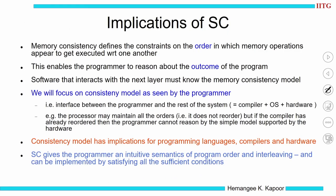The implications of the sequential consistency model are: first, it defines constraints on the order in which memory operations should appear to execute, and the benefit is that the programmer can reason about the outcome of the program. Software must know the memory consistency model. There is a contract between every layer — programmer and compiler, compiler and OS, compiler and hardware — all must follow the same consistency model.